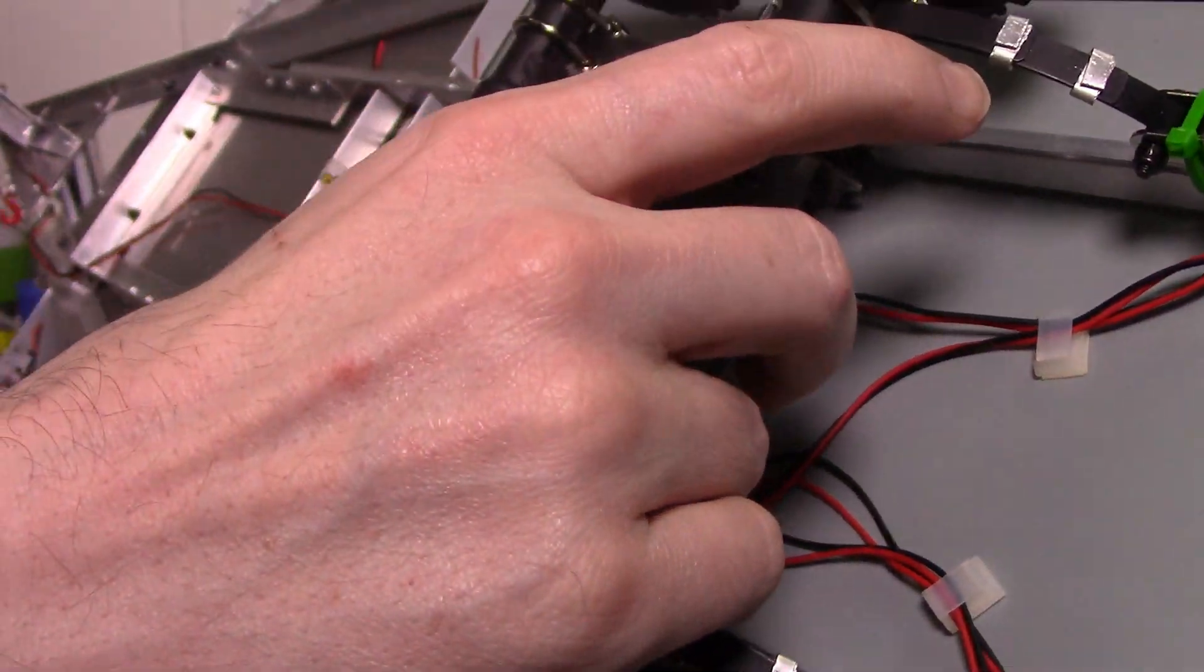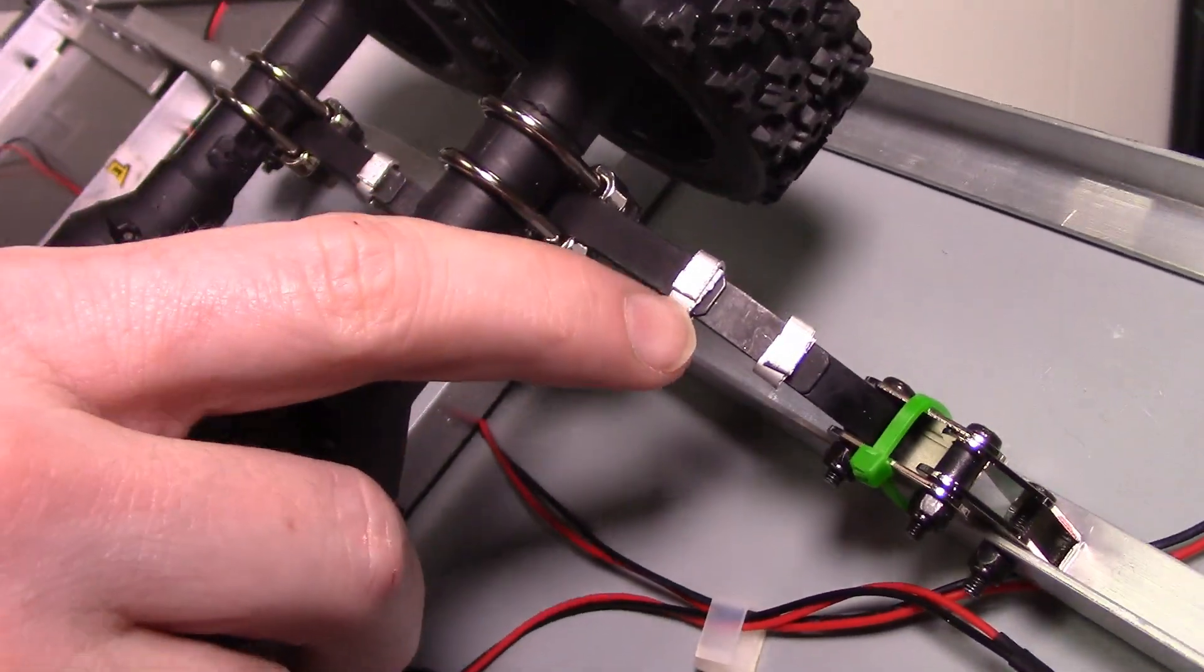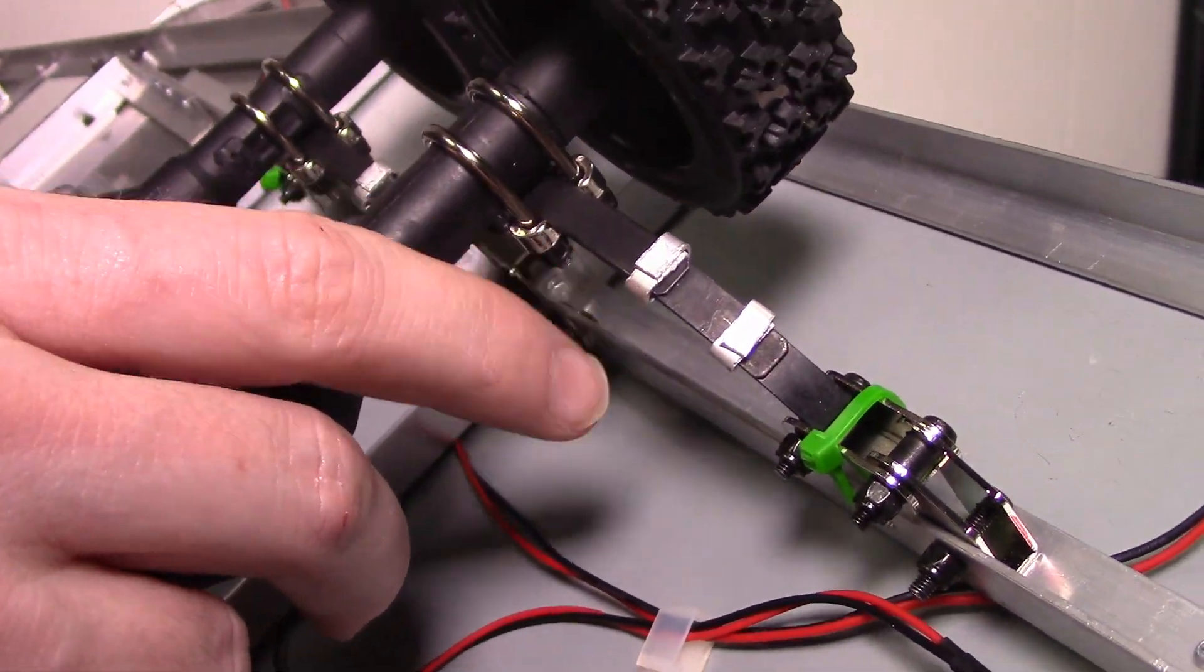I have also taken off the zip ties and just made my own little metal clamps for the leaf springs here.